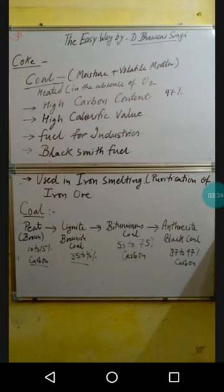Peat is used as fuel but is not considered a good fuel. When peat remains under the ground for a longer period of time under high pressure and high temperature, it gets converted into lignite coal. Lignite is a little bit brown in color and has a carbon content of approximately 35 to 50 percent. In Rajasthan, lignite coal mines are present near Bikaner, Barmer, and Giral. Gas from these mines is used to produce electric energy at Suratgarh and nearby power stations — these are lignite-based thermal stations.